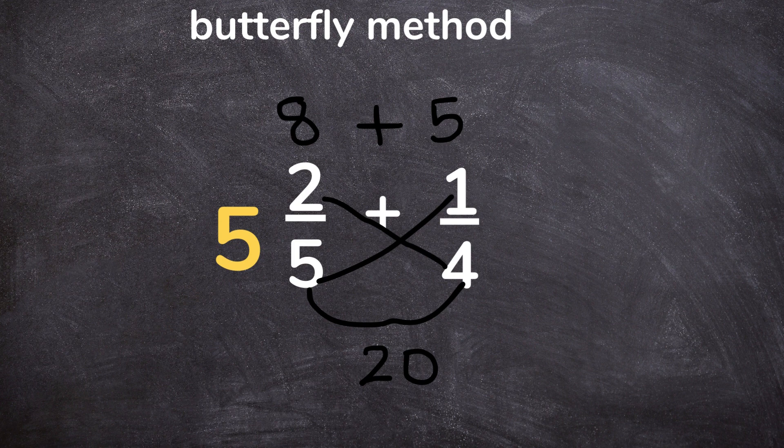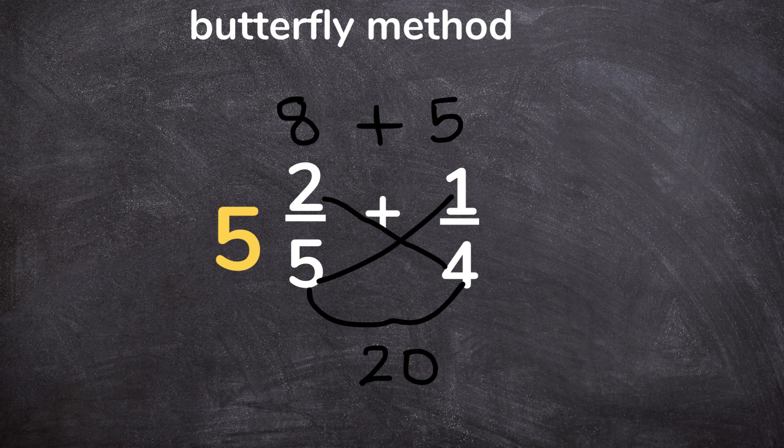And then you do the same for the other numerator and denominator, so you do 1 times 5, you get 5. So on the top you now have 8 plus 5. I'm putting plus because remember this is addition of this fraction.